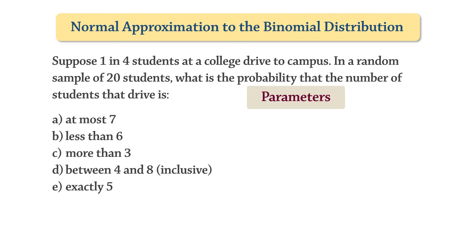First, let's identify the parameters. The probability of success here is 1 in 4, or p equals 0.25. And the probability of failure, q, is 1 minus p, which gives 0.75. We're given a random sample of 20 students, therefore, n is 20.